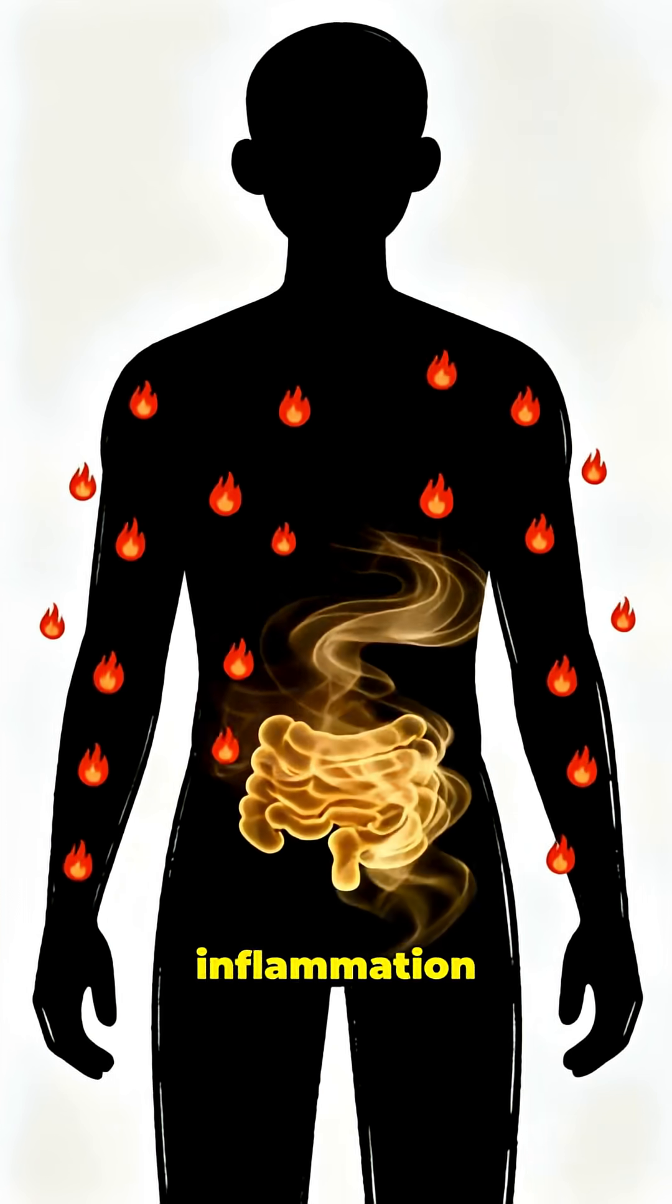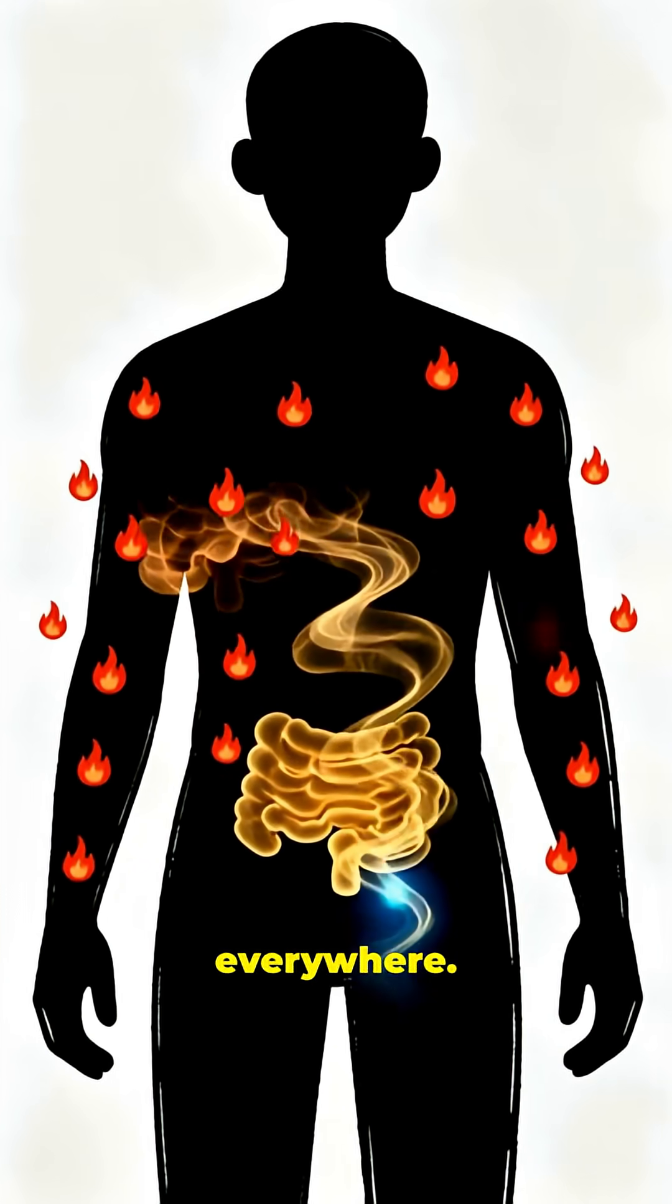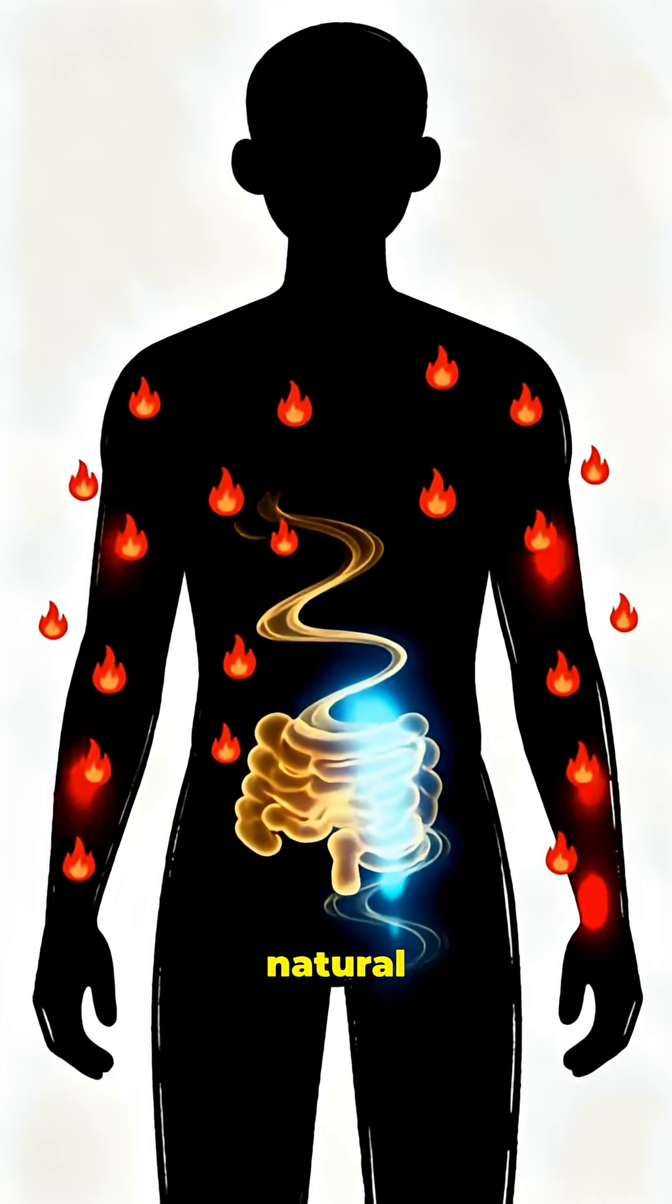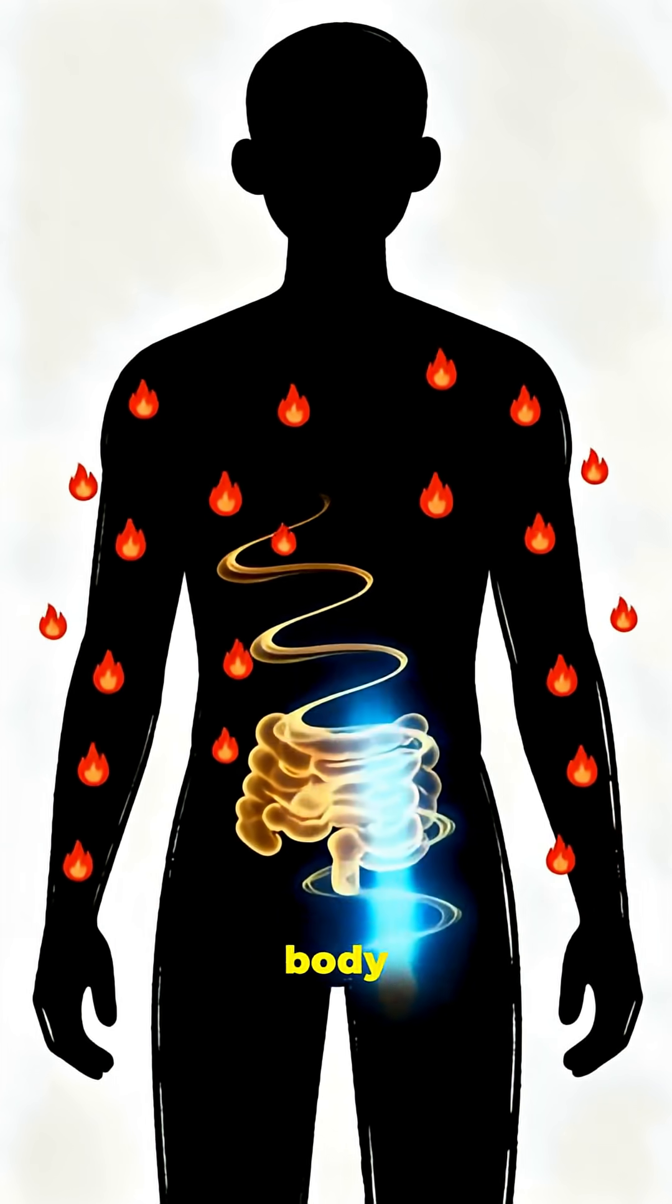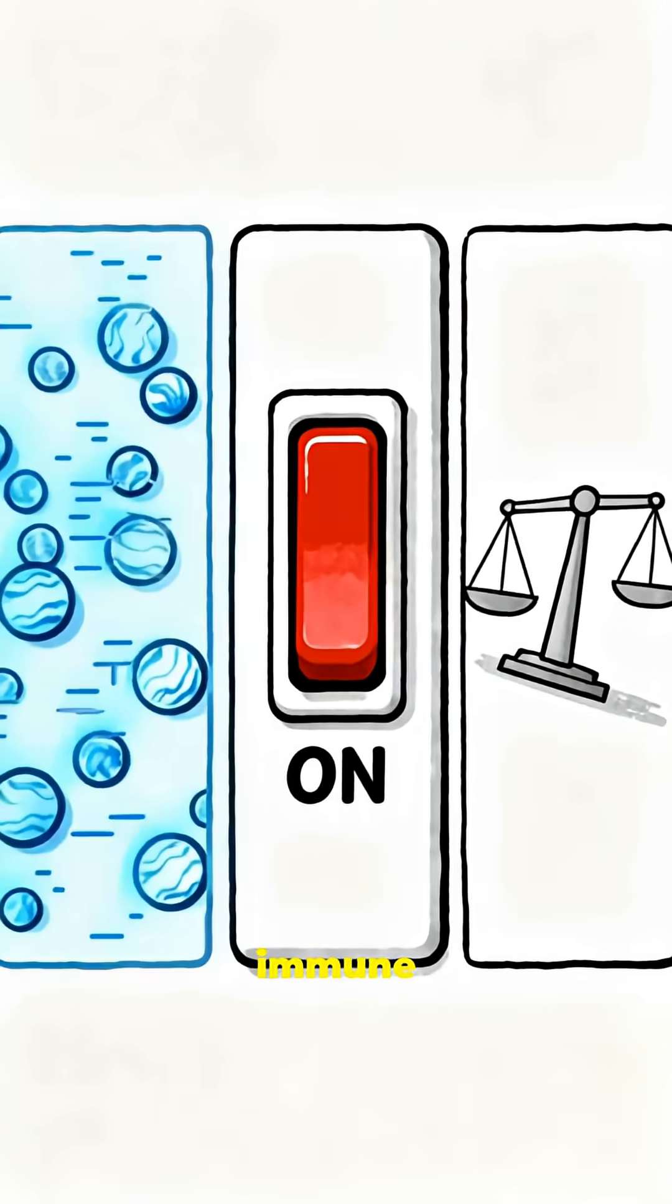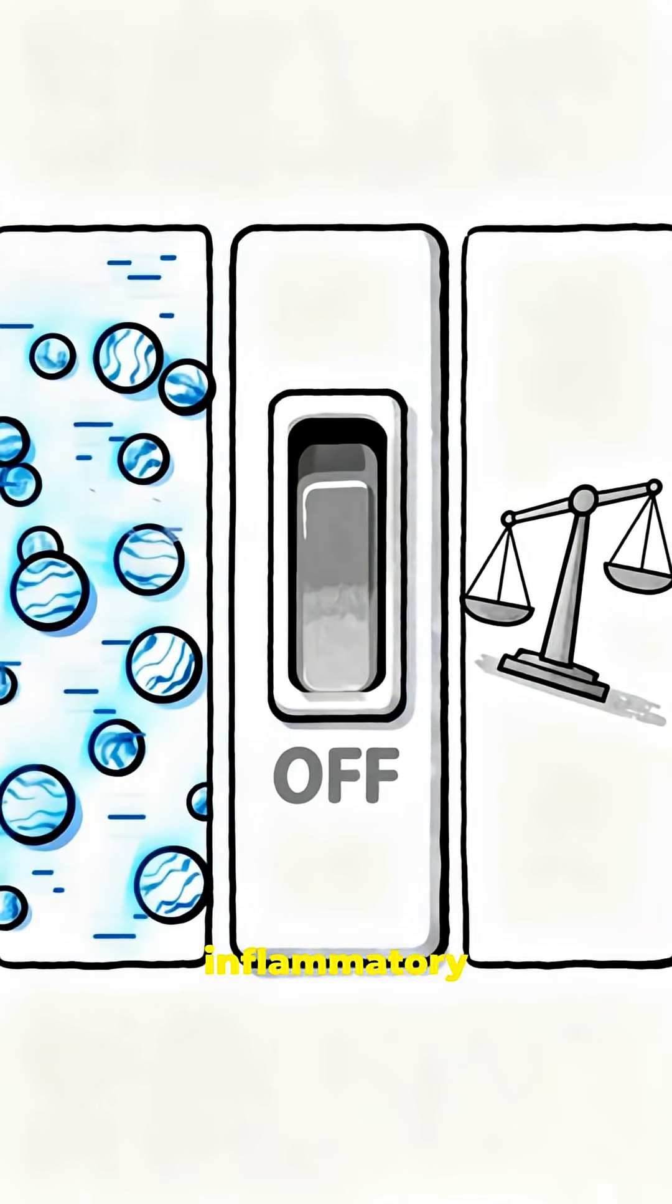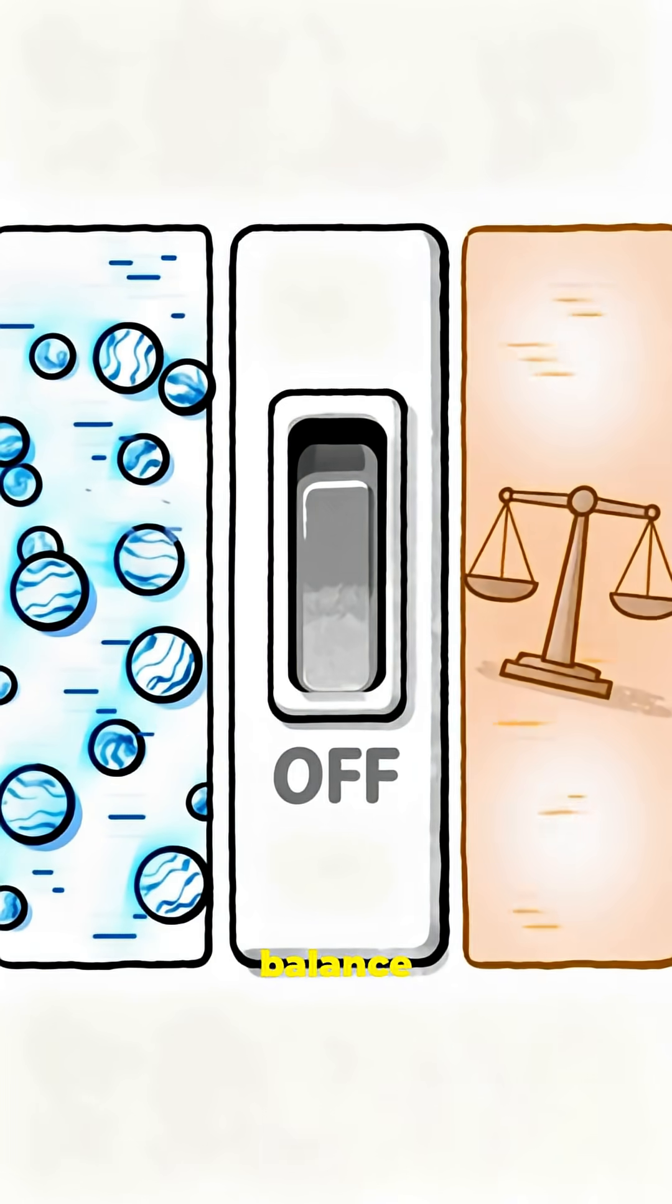It reduces inflammation everywhere. Butyrate is one of the strongest natural anti-inflammatory molecules your body makes. It calms the immune system, switches off inflammatory genes, and restores balance across the whole body.